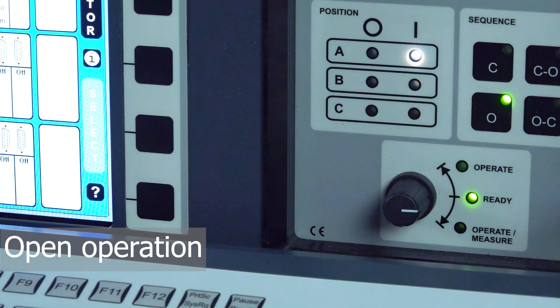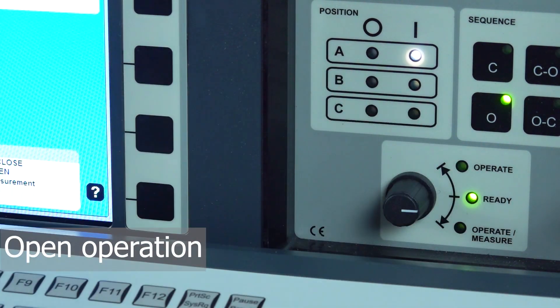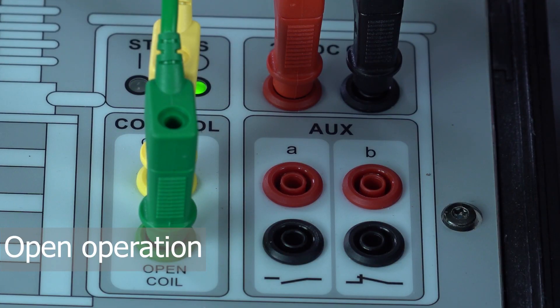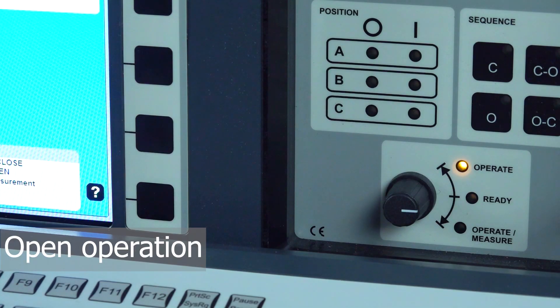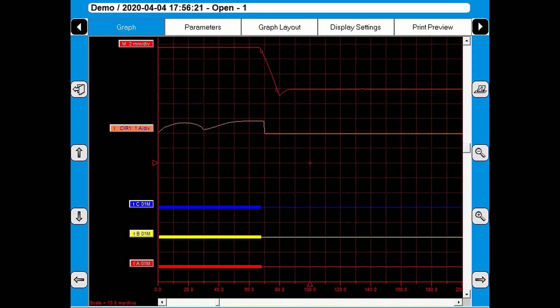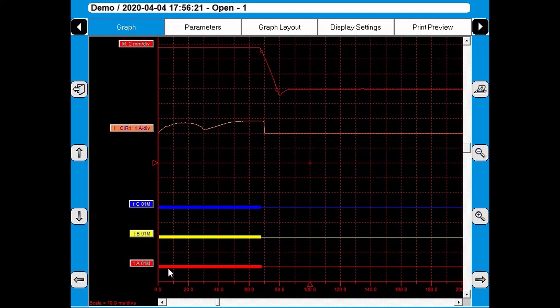We're going to turn the knob so the instrument will operate the circuit breaker simulator. I turn the knob to the right. And the measurement begins after a short delay. And the status indication change on the simulator.